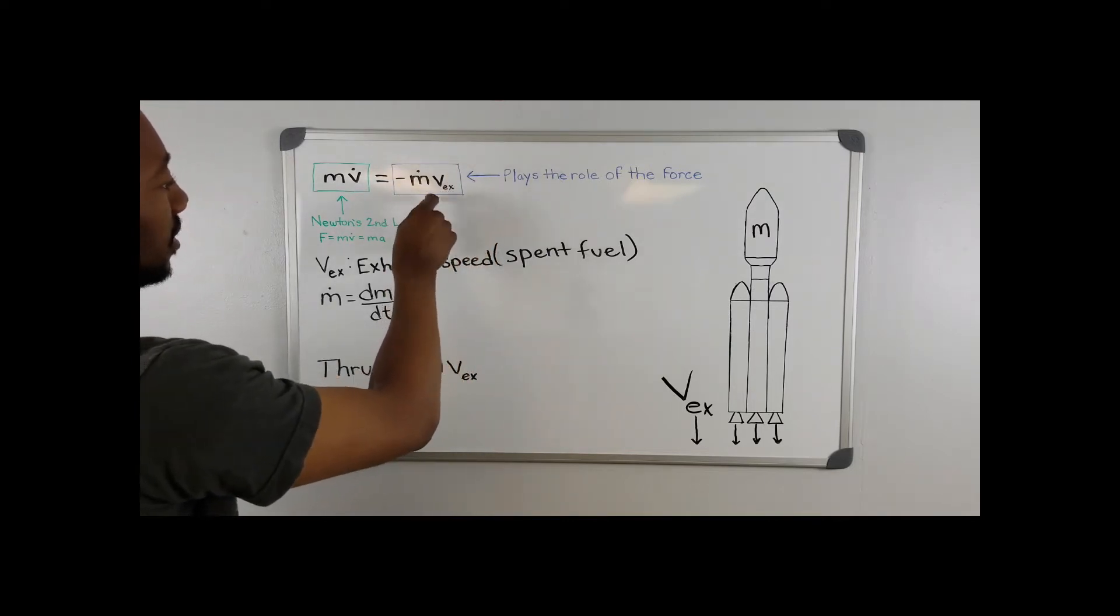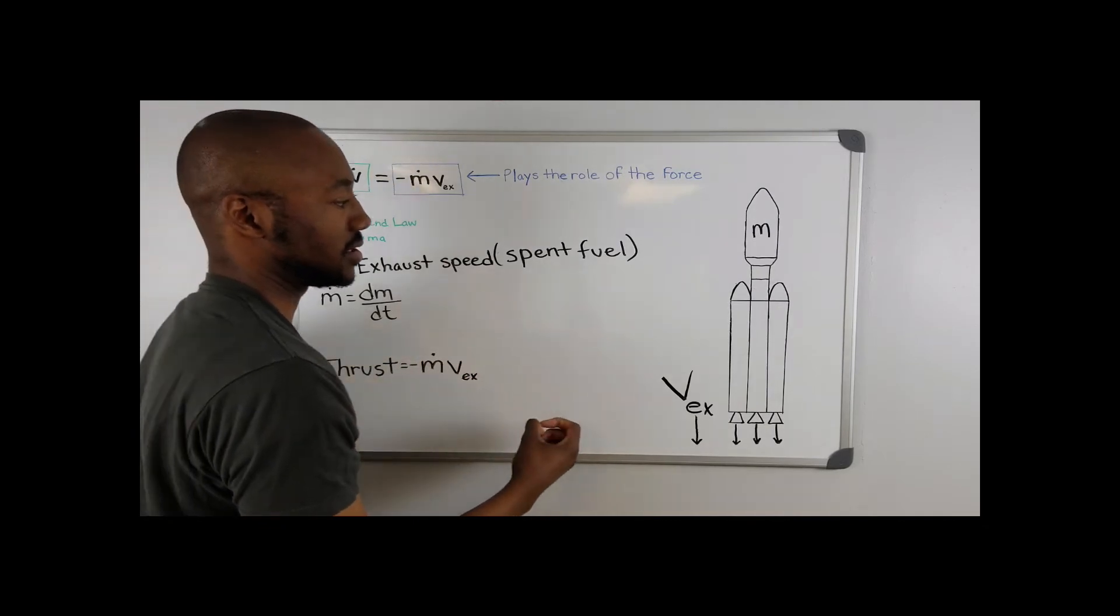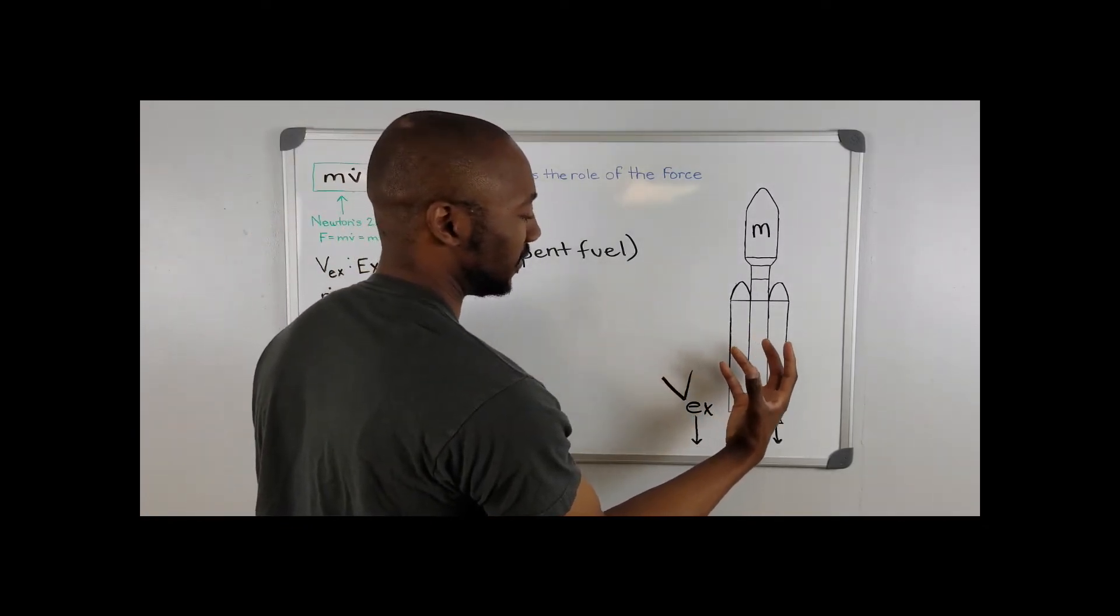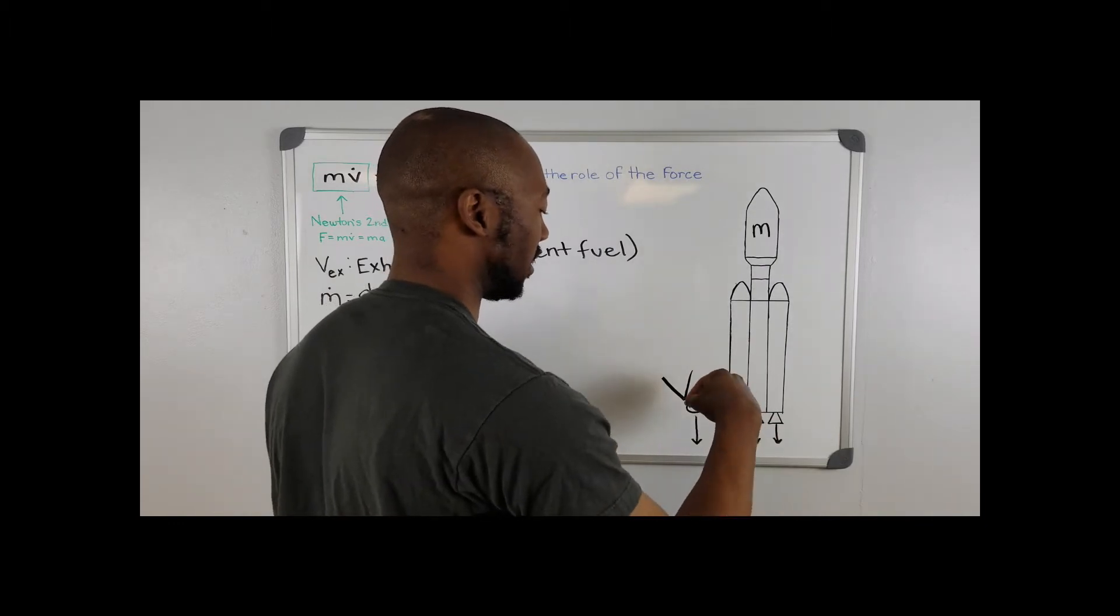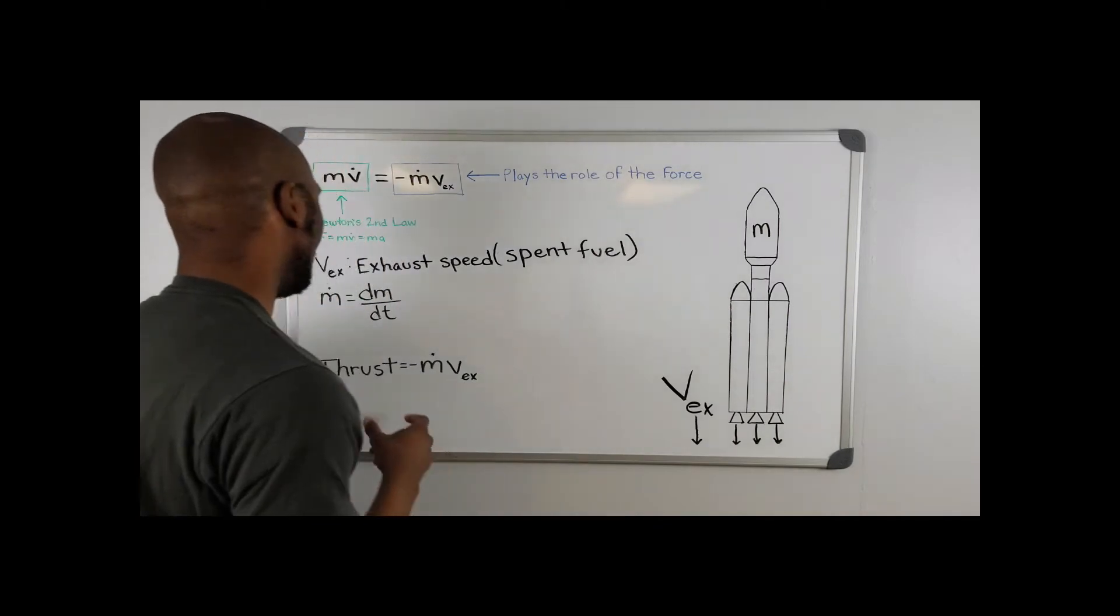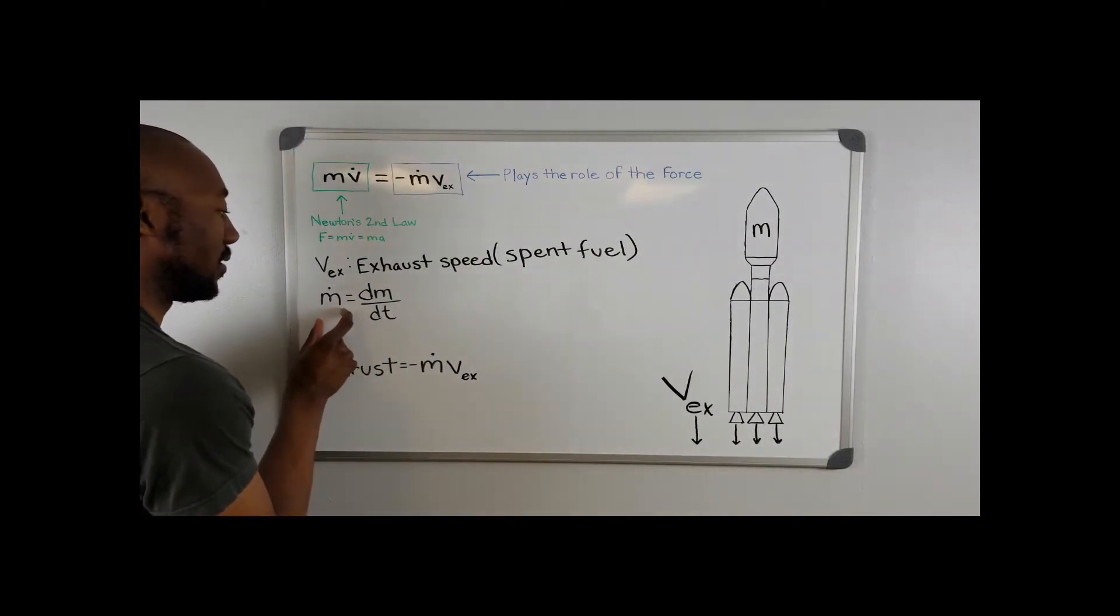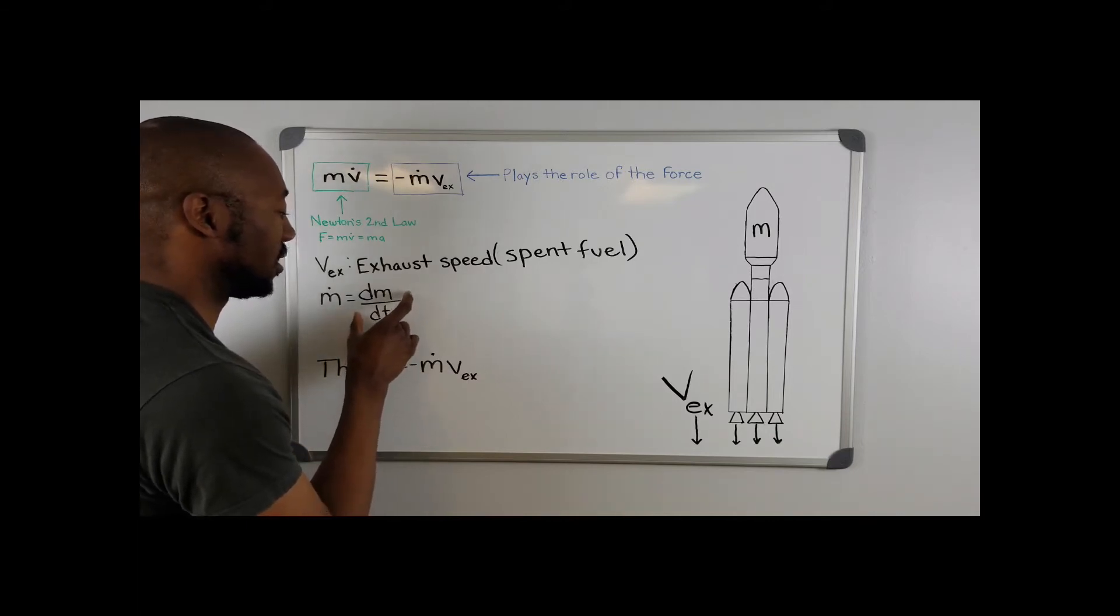These terms here, Vx is going to be the exhaust velocity. This is going to be the speed at which the fuel is being expelled from the exhaust, which is going to create a momentum in the opposite direction. And here is going to be the derivative of mass, which is going to be noted as m-dot. This is going to be the change in mass with respect to time.